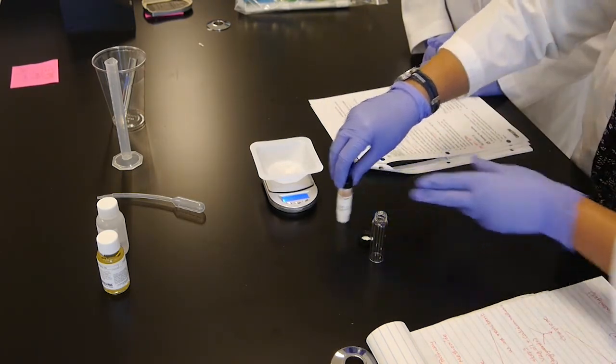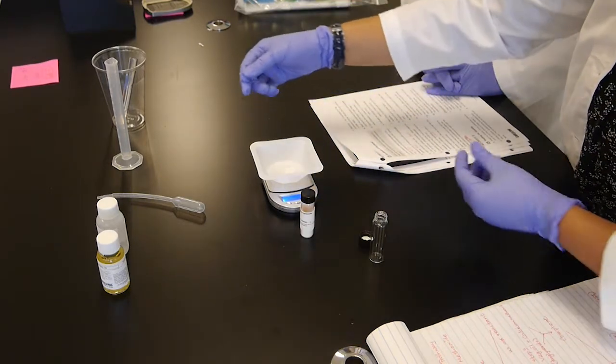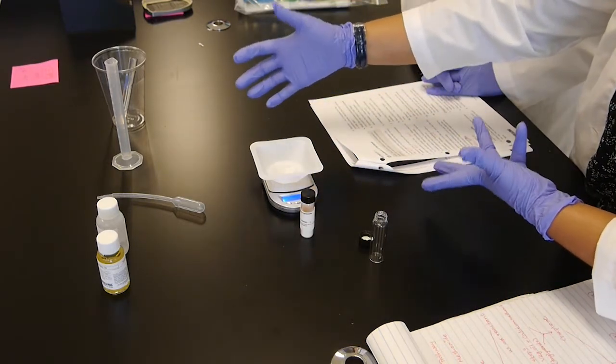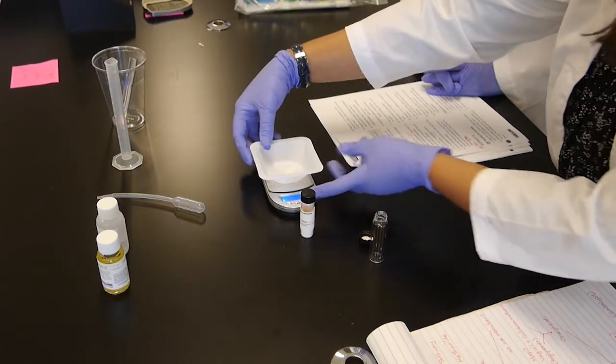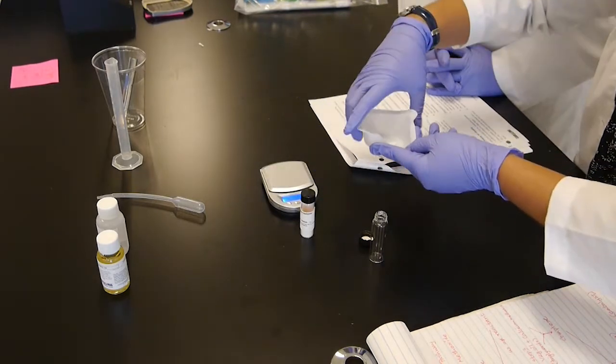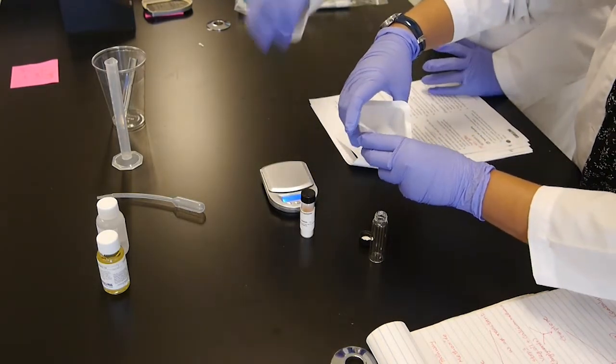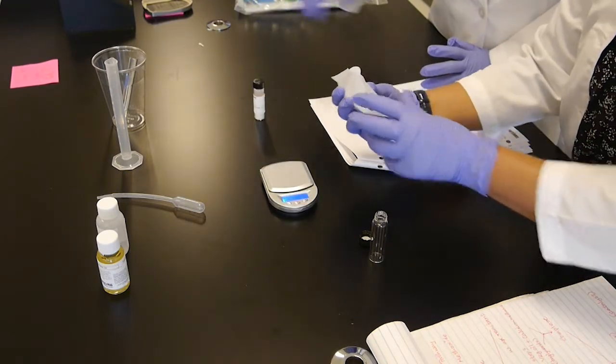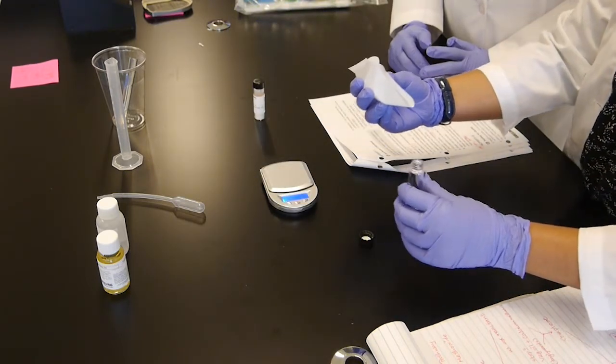Tare it. So I could not get it exactly at 0.02 grams. When you try it, try to be as close to 0.02 grams. Now I'm going to put the calcium hydroxide in the vial.